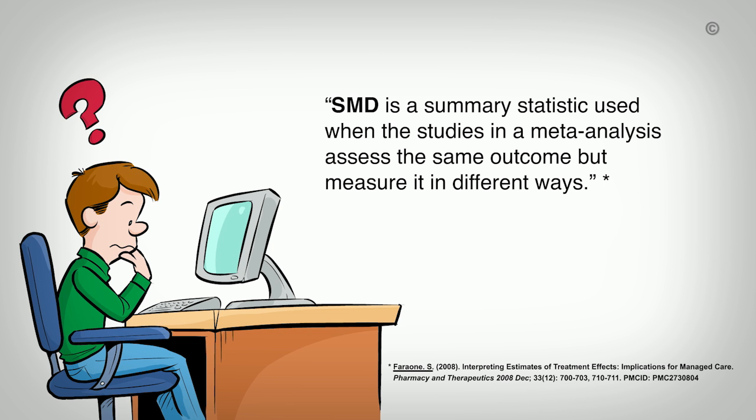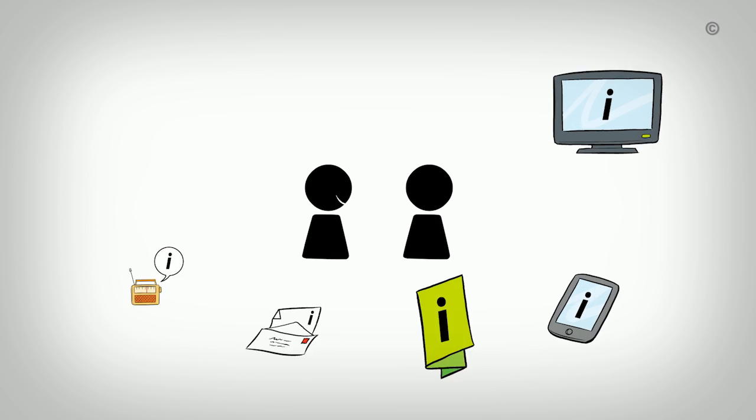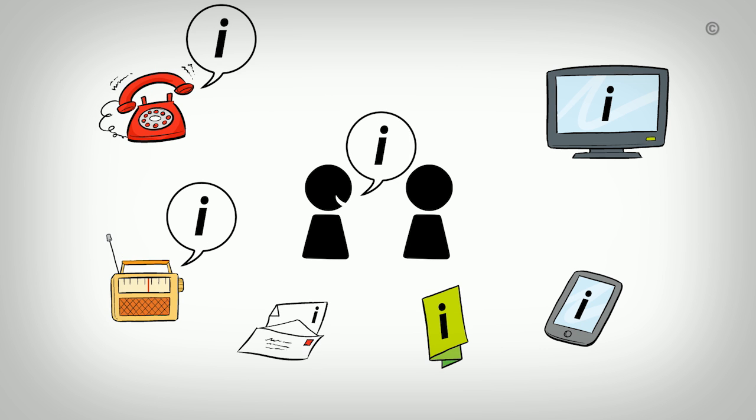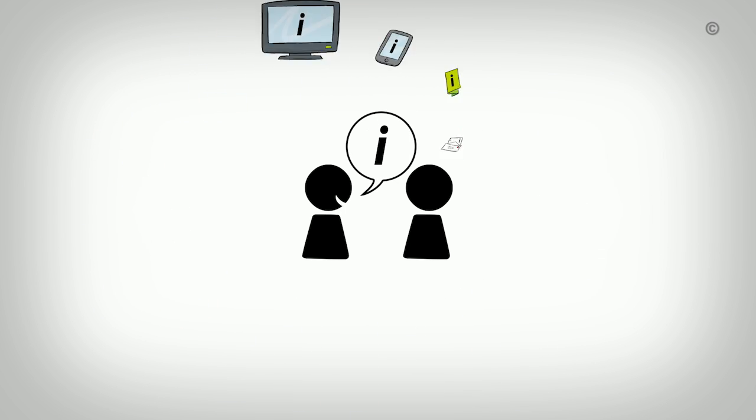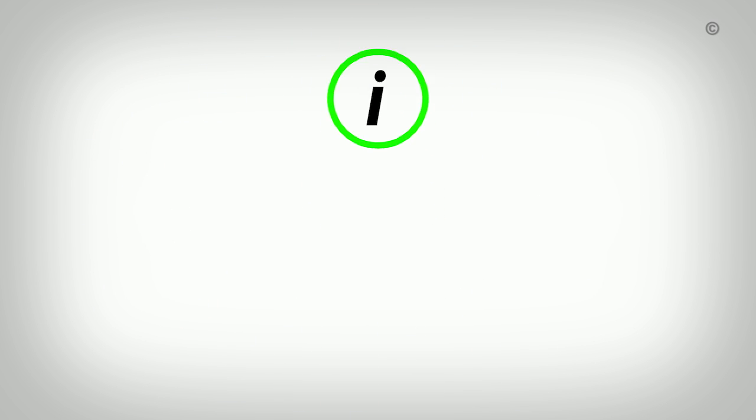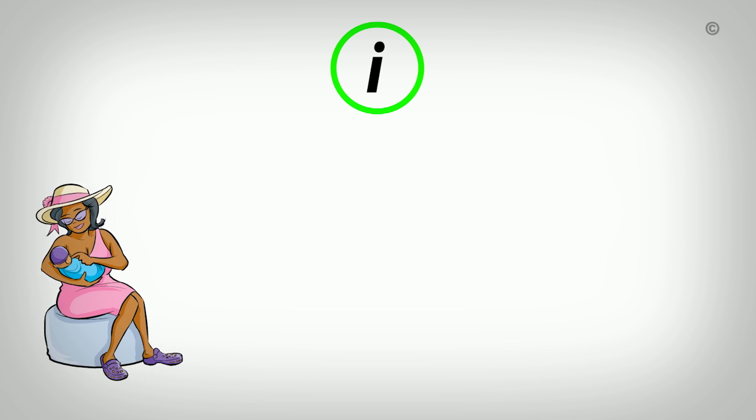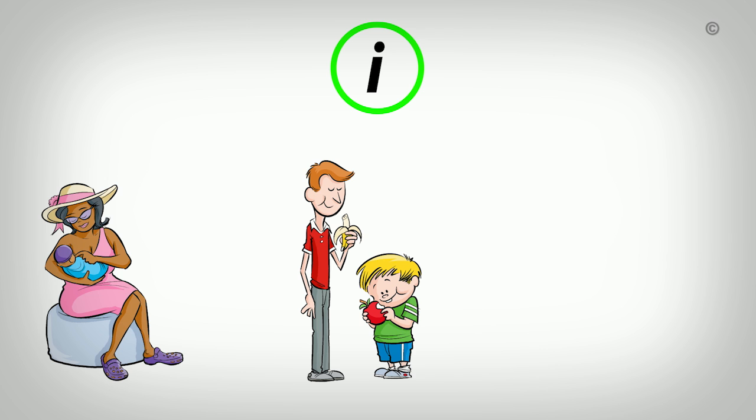To understand what an SMD is, we need to look at how outcomes are measured. There are many different types of public health interventions and many ways to measure their impact. For example, we may want to know if a public health program affects the length of time women breastfeed, or increases the number of fruits and vegetables people consume per day, or improves teen mental health.